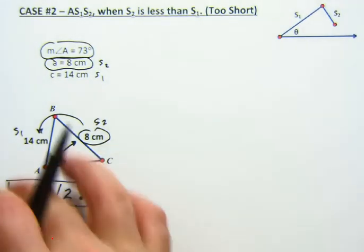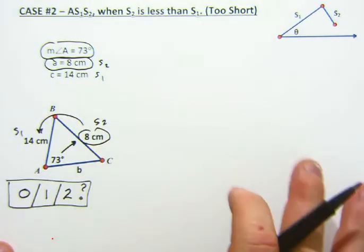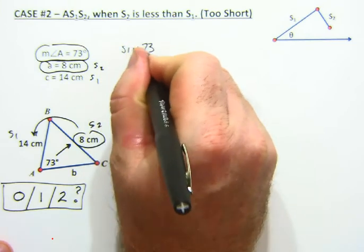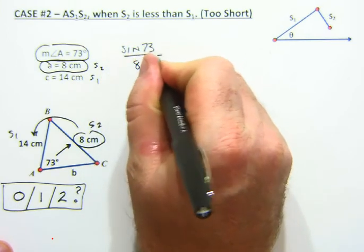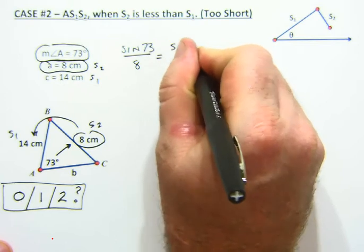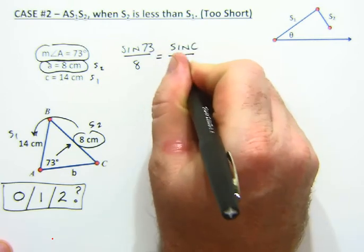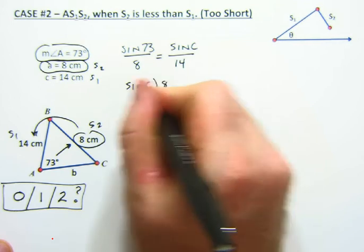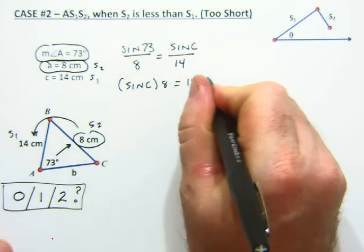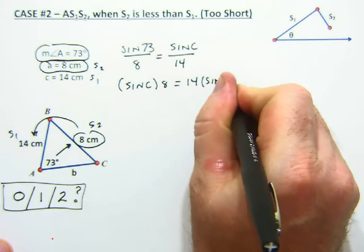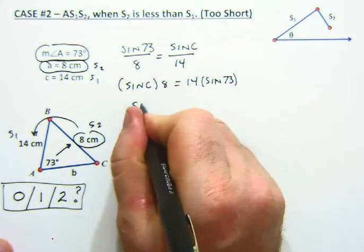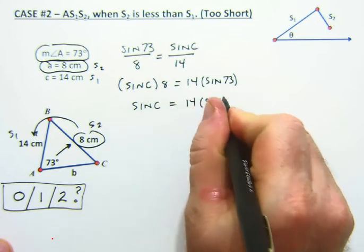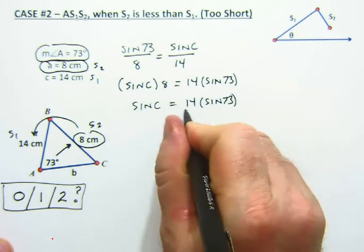So we're just going to start it. We're going to draw it like it all works nicely, and we'll just find out what happens. So the sine of 73 is to 8, as the sine of C is to 14. Sine of C times 8 equals 14 times the sine of 73. Sine of C equals 14 times the sine of 73 over 8.